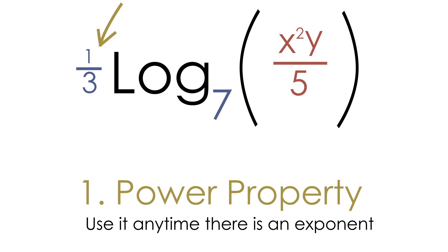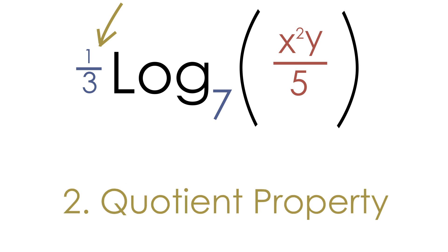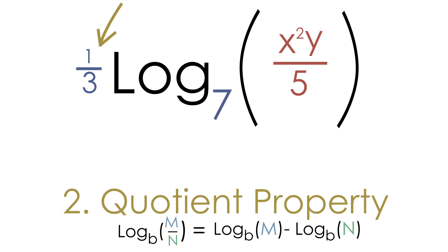This brings us to the second property we can use to expand this log: the quotient property. The idea is that if two things are being divided, you can separate them by writing two separate logs with a minus sign in the middle.